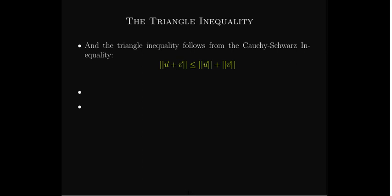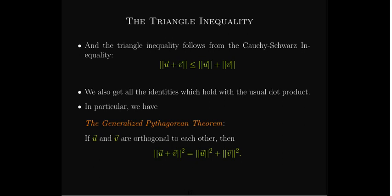Almost all of the results we got from the dot product hold true in a general inner product space — for example, the triangle inequality and other identities. We also have the generalized Pythagorean theorem: if two vectors are orthogonal, meaning their inner product is zero, then the square of the norm of their sum equals the sum of the squares of their individual norms — giving a squared equals b squared plus c squared. Having orthogonal vectors is very useful for many applications, and in the next section we'll look at how to construct a set of orthogonal vectors in an inner product space.